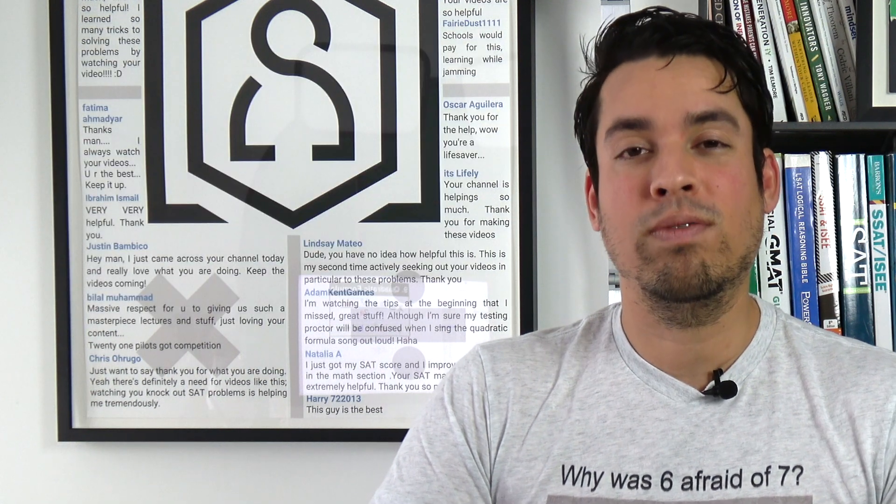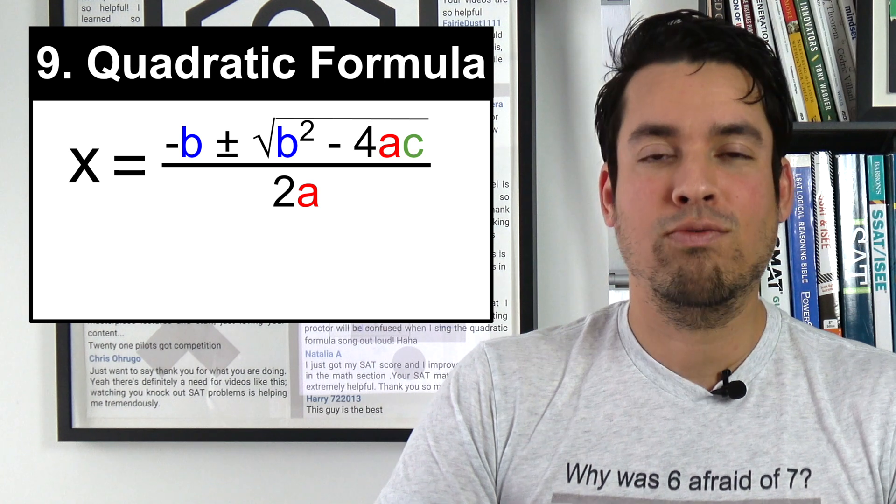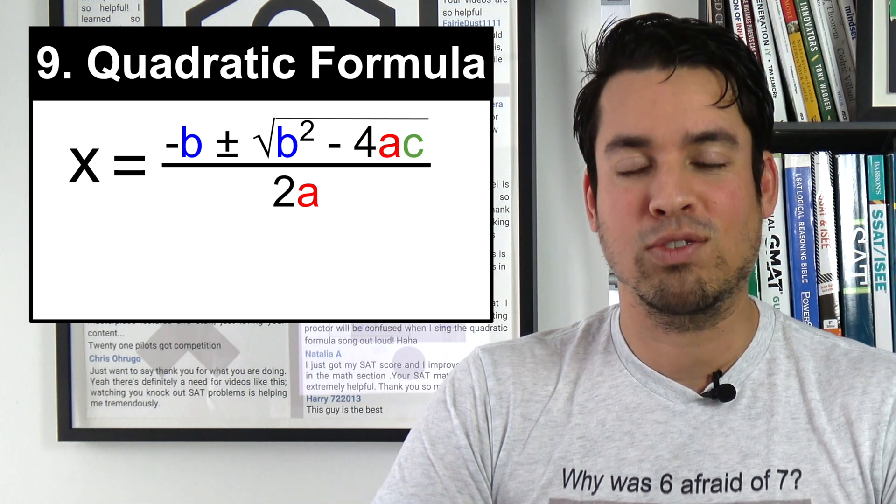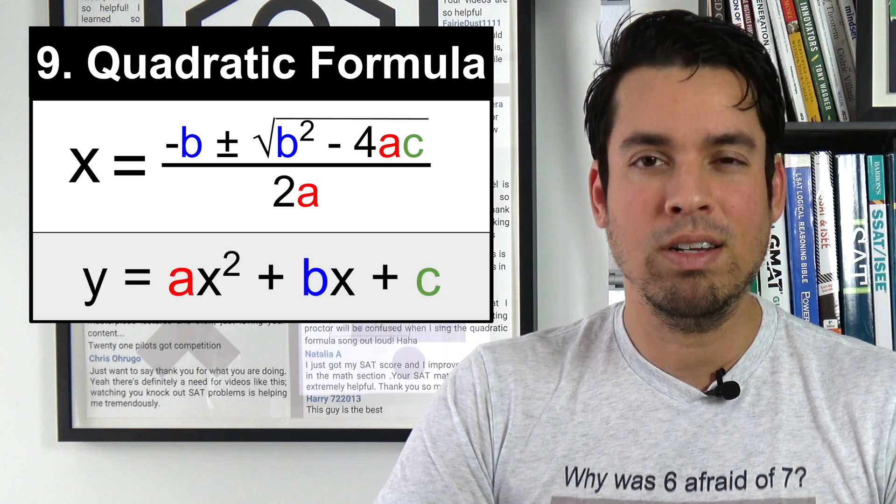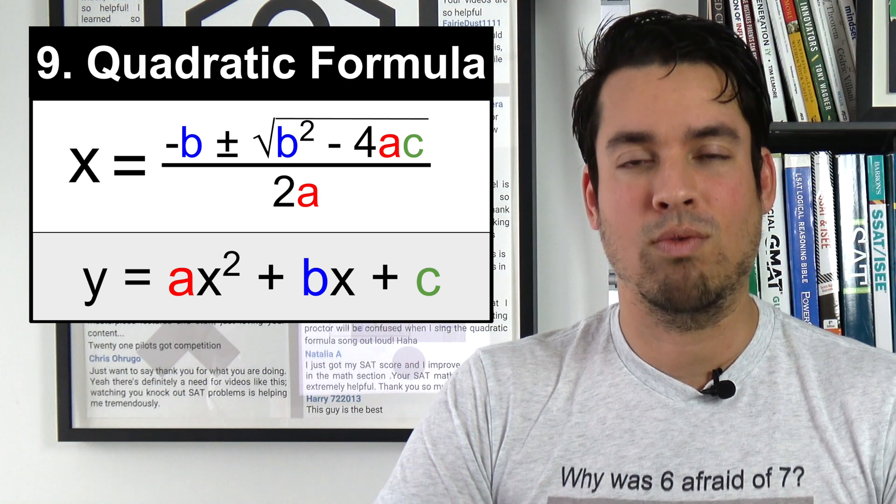The next formula on the list is one of the most important in algebra, and that is the quadratic formula. This formula is negative b plus or minus the square root of b² minus 4ac over 2a. It is imperative that you have this formula down memorized when test day arrives.